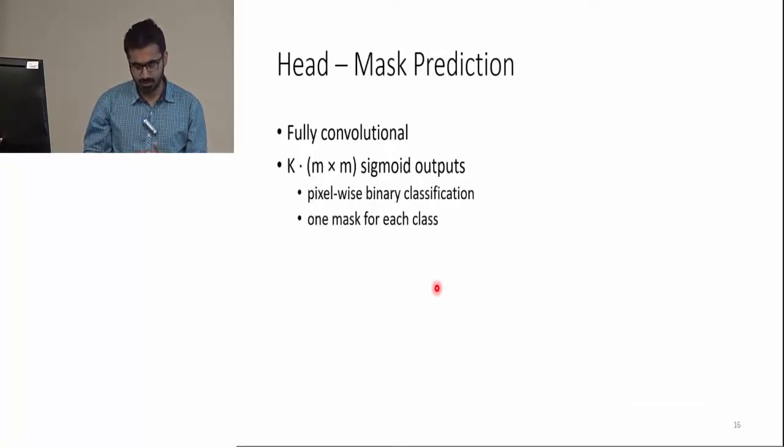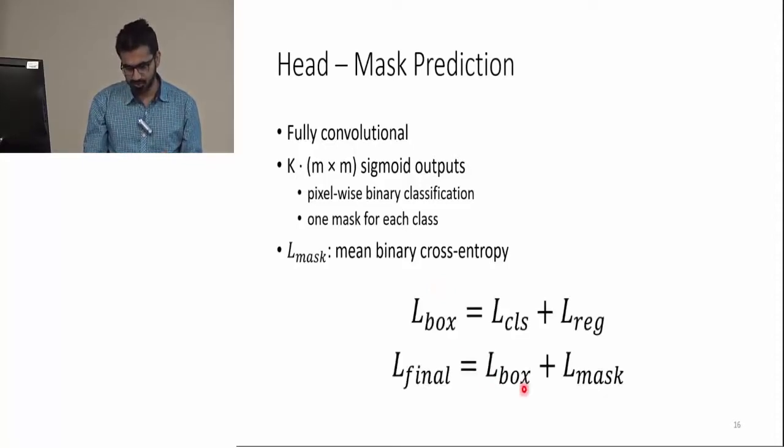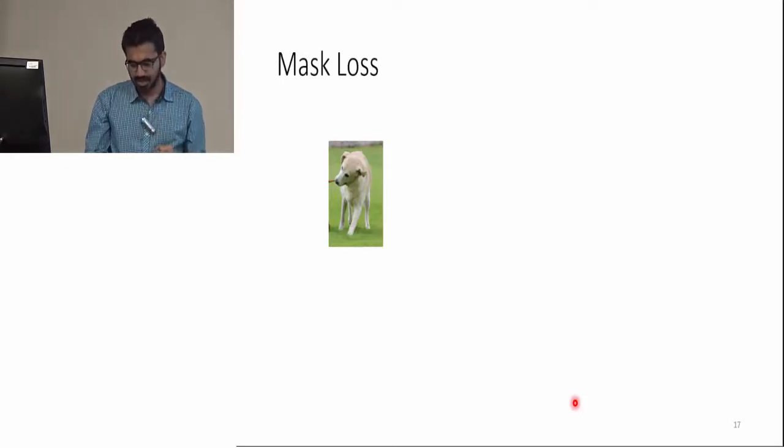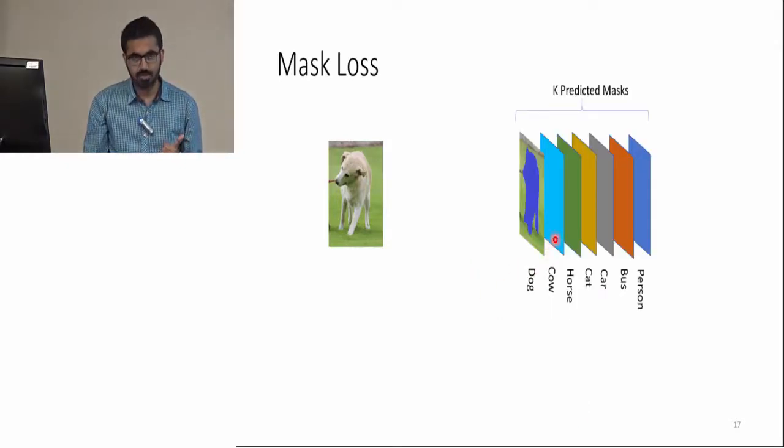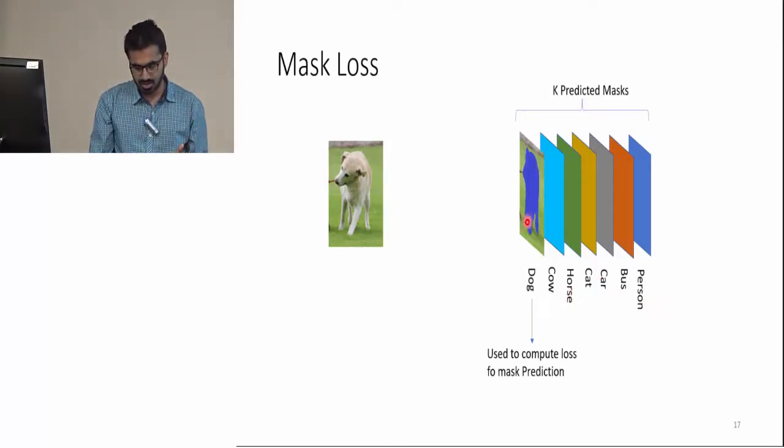There is another parallel branch which predicts the mask. The mask prediction branch is fully convolutional and it predicts m by m output masks. This mask prediction branch is trained using binary cross-entropy loss, and the final loss is the sum of the loss for the bounding box and the loss for the mask. As I mentioned, the mask loss is binary cross-entropy. However, for a given image, we get k mask predictions, one for each class in the dataset. To compute the loss, the mask for the class which is predicted by the classification layer is picked. In this case, we will pick the predicted mask for the dog class and use it to compute the loss.